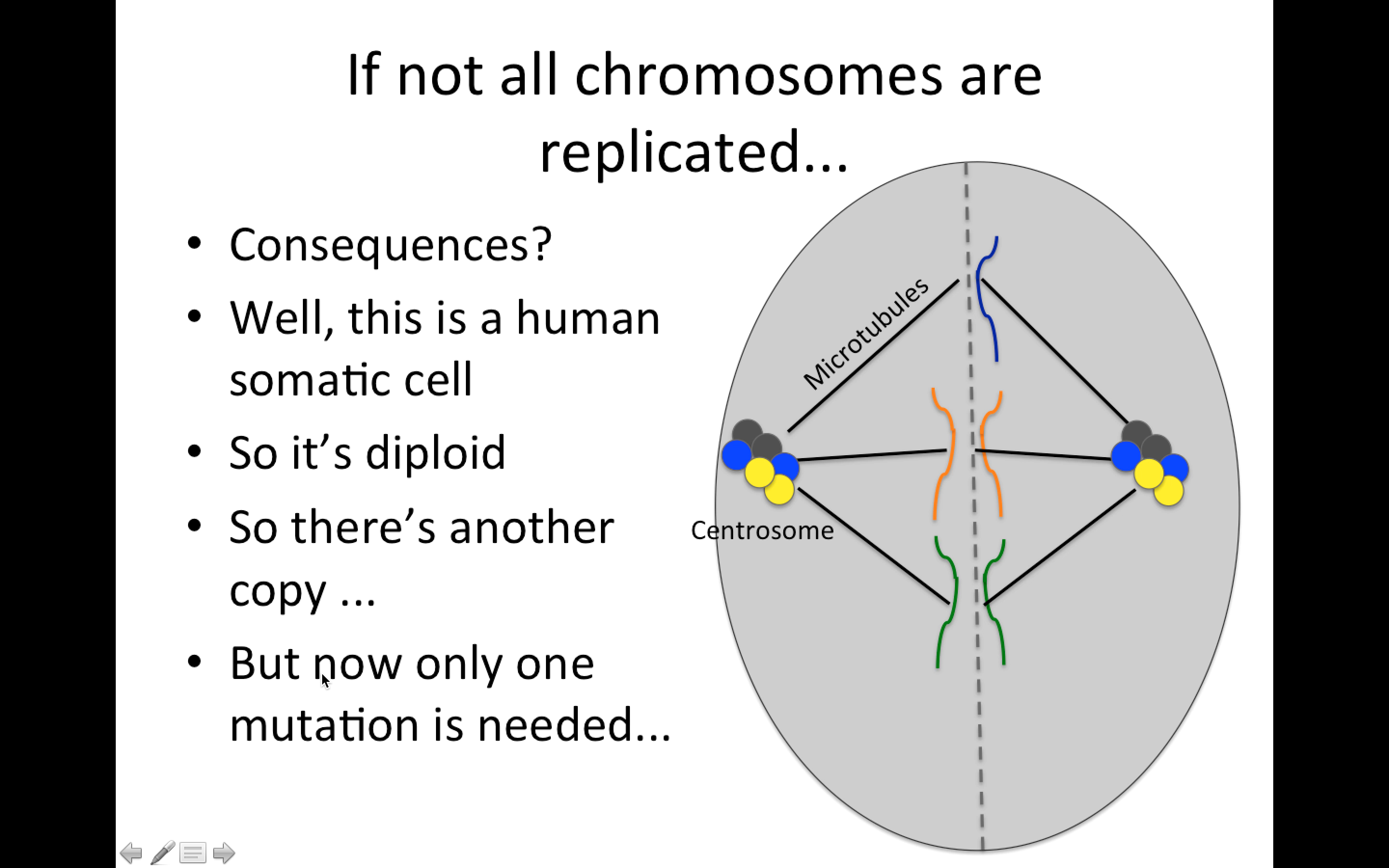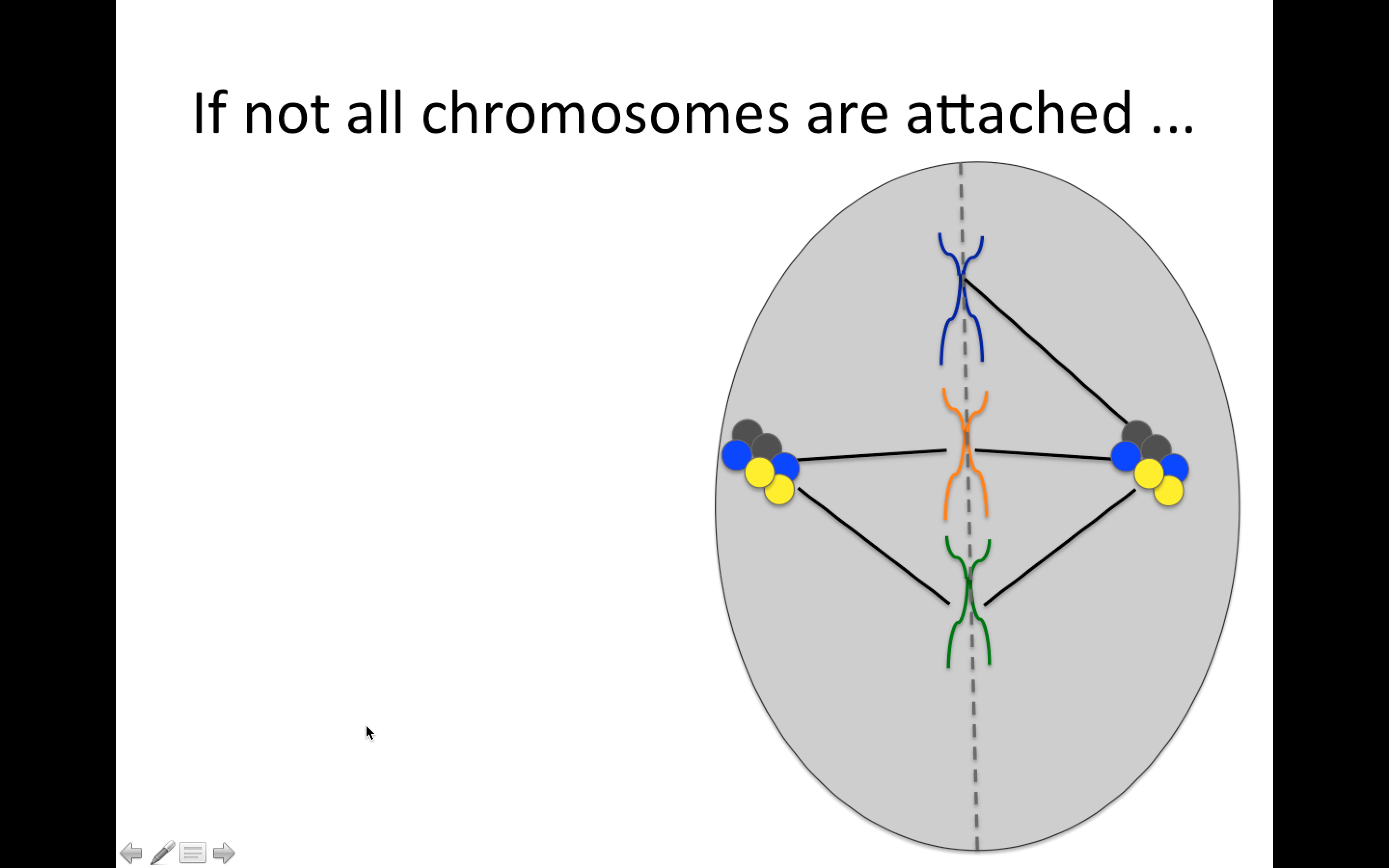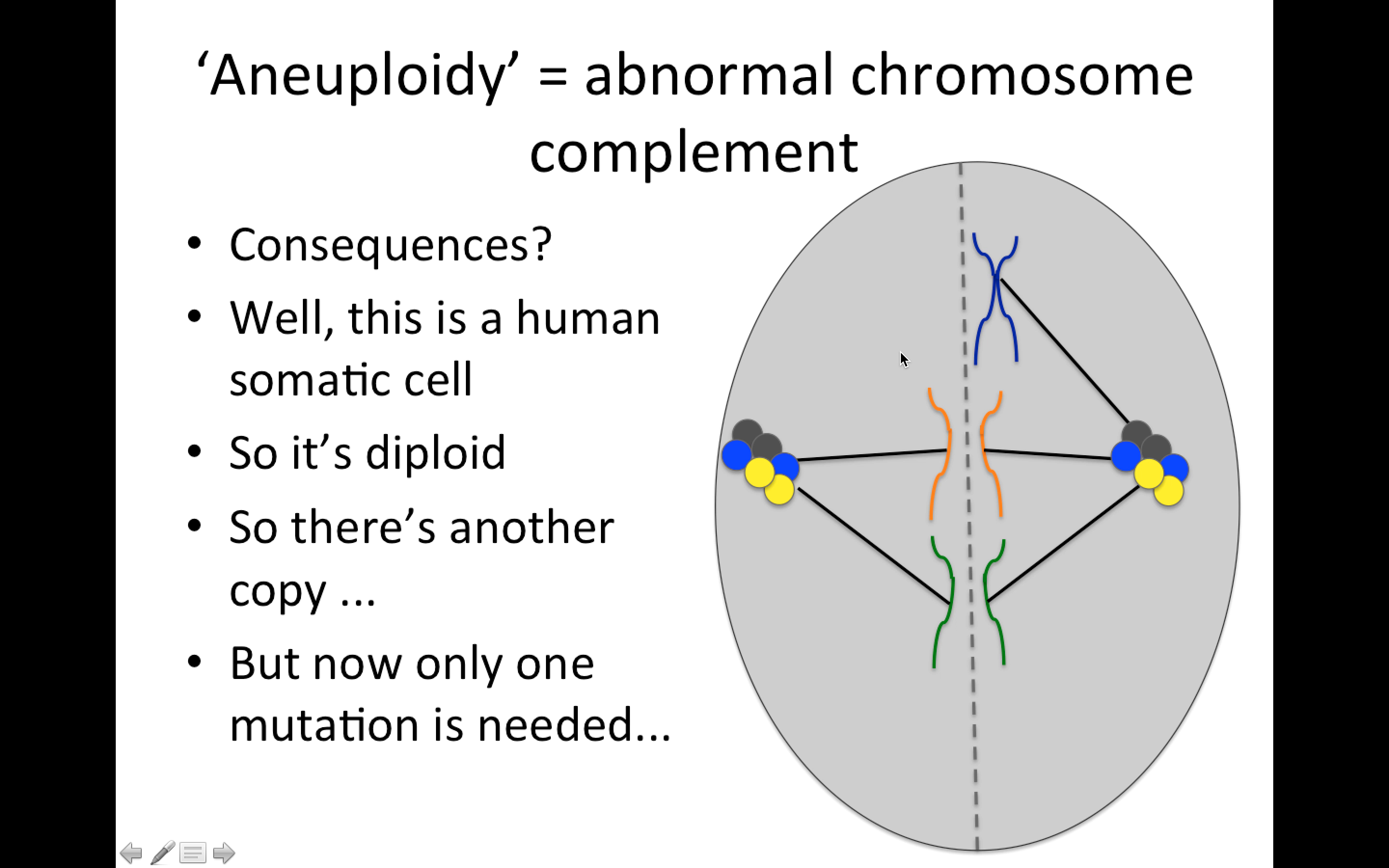So there is another copy, but the problem now is that we only have one mutation that's needed. And the same thing, if not all chromosomes are attached, now we end up with a cell that does not have two copies of this chromosome. And we're going to call this aneuploidy, this is a word worth knowing, aneuploidy, which means abnormal chromosome complement. So actually both of these cells now are aneuploid, because this one has an extra copy of the blue chromosome, and this one is missing a copy.